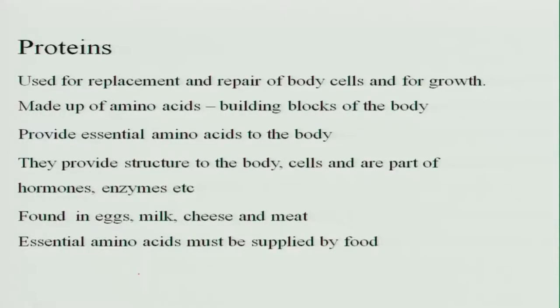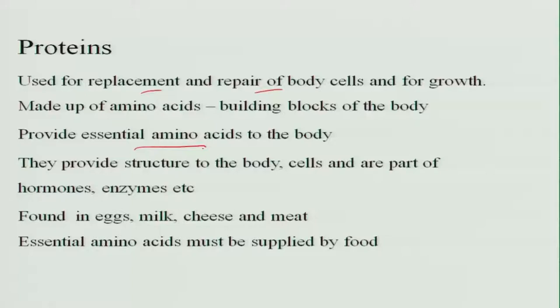Starting with the proteins. Proteins are the substances that are used for replacement and repair of the body cells for growth. These are made up of amino acids. That means the amino acids are the building blocks of proteins. They provide essential amino acids to the body. When we call them essential amino acids, they are not synthesized by the body — they have to be essentially provided from the food. So, they provide structure to the body, cells and are part of hormones and enzymes.